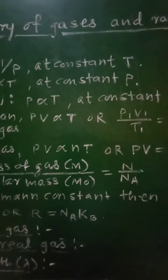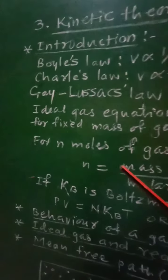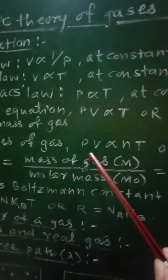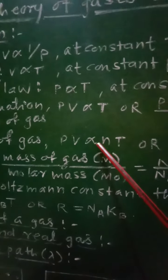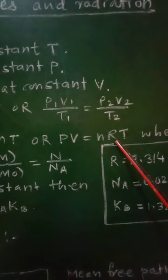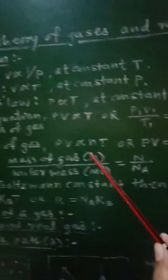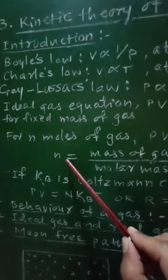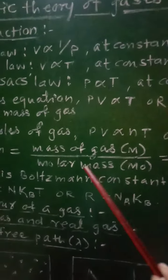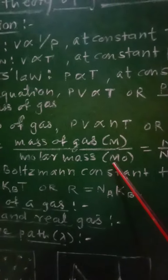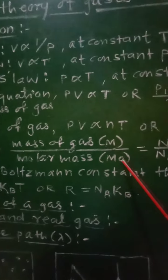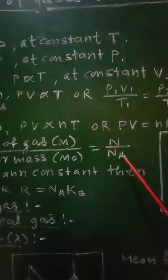Instead of that, if we consider N moles of gas, the equation will be written as PV proportional to NT, or PV = NRT, where N is the number of moles, given as the mass of the gas M divided by its molar mass M₀, which can also be written as N/Nₐ.